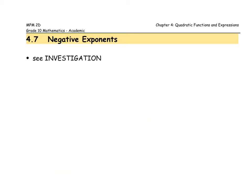I'd like to go back to the example of y to the power of negative two. In yesterday's lesson there were a couple of different ways we could see this. I'm going to argue there's another way: we can think of this as a fraction over one and what we've done is simply taken the reciprocal of that base — flipped it upside down — giving us one over y, and then squared that, making the exponent positive by taking the reciprocal of the base.